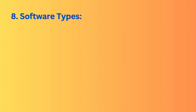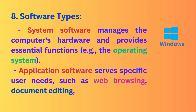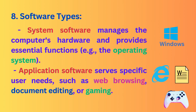Software types. System software manages the computer's hardware and provides essential functions — for example, the operating system. Application software serves specific user needs, such as web browsing, document editing, or gaming.